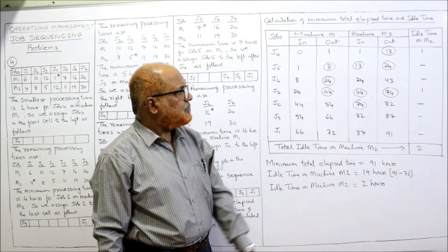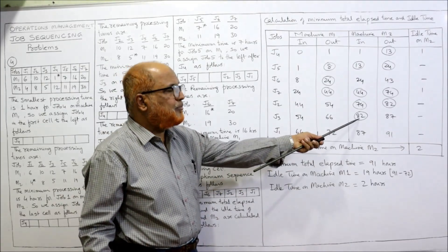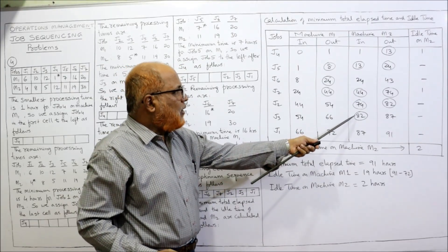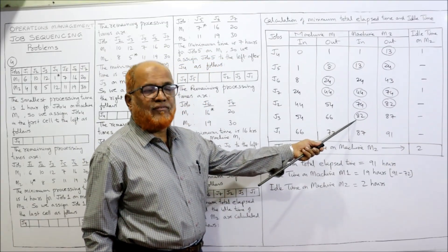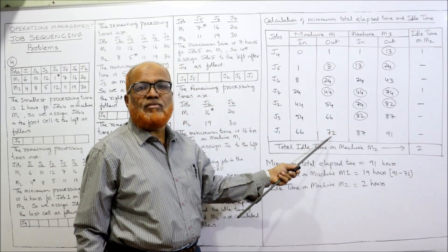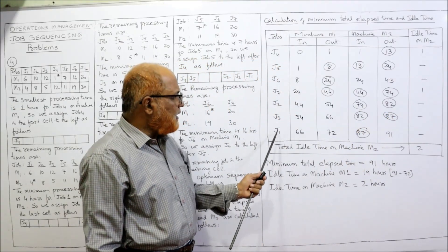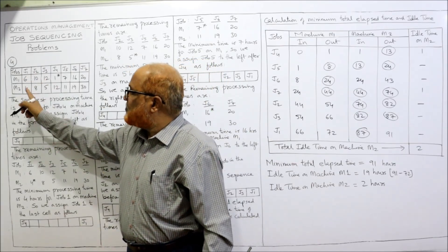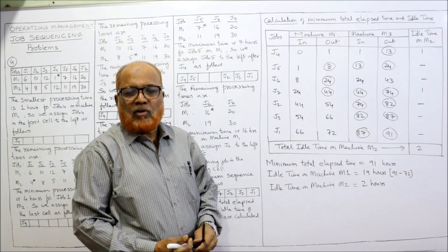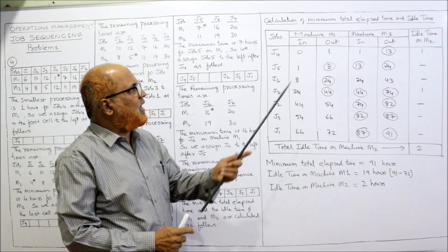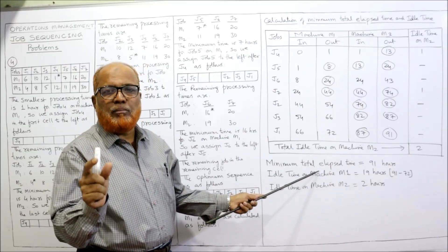J2 on M2 takes 8 hours: 74 plus 8 equals 82. M1 finishes J3 at 66, but 82 is higher, so J3 starts on M2 at 82 with no idle time. J3 on M2 takes 5 hours: 82 plus 5 equals 87. M1 finishes J1 at 72, but 87 is higher, so J1 starts on M2 at 87. J1 on M2 takes 4 hours: 87 plus 4 equals 91. Total minimum elapsed time is 91 hours.